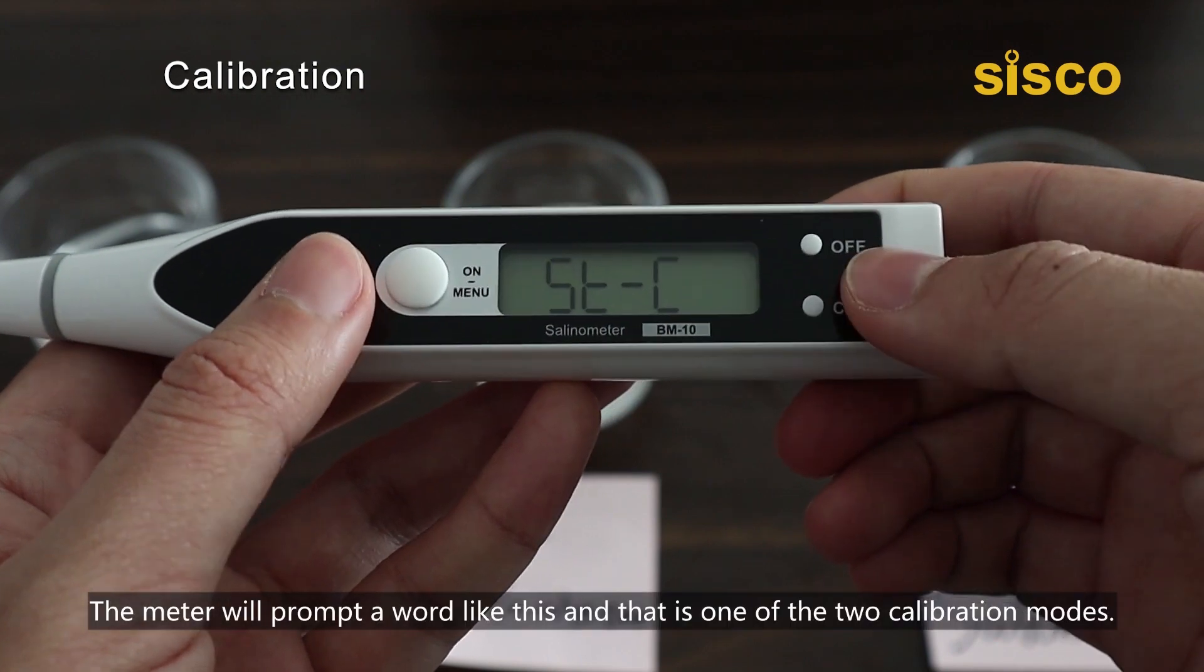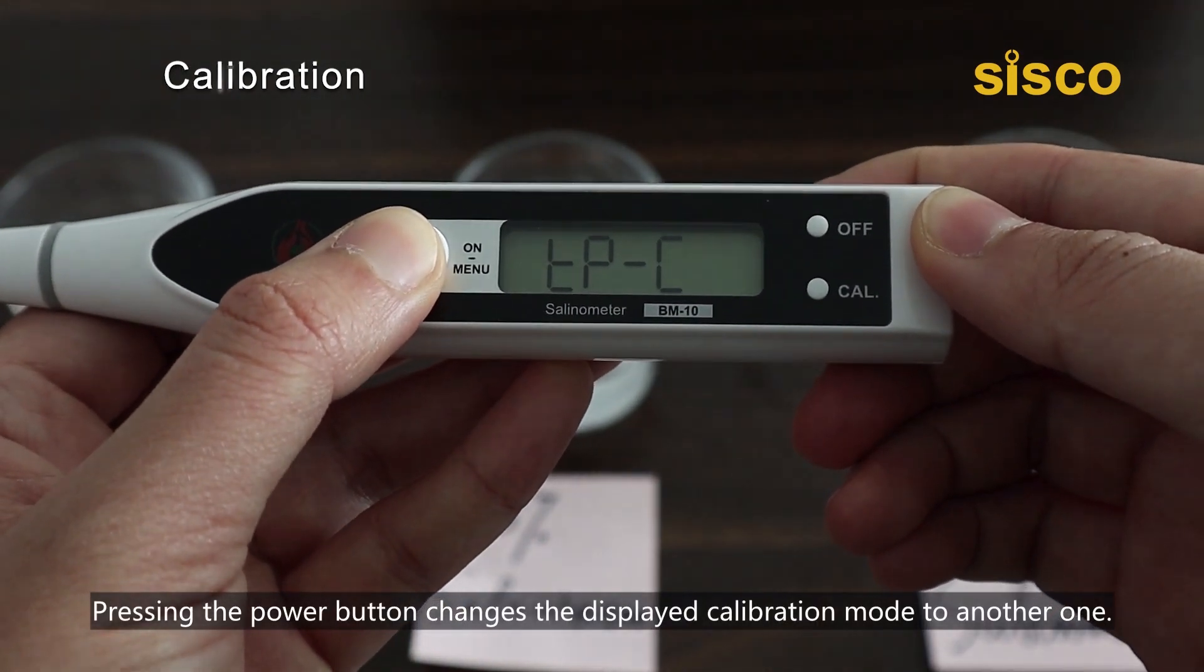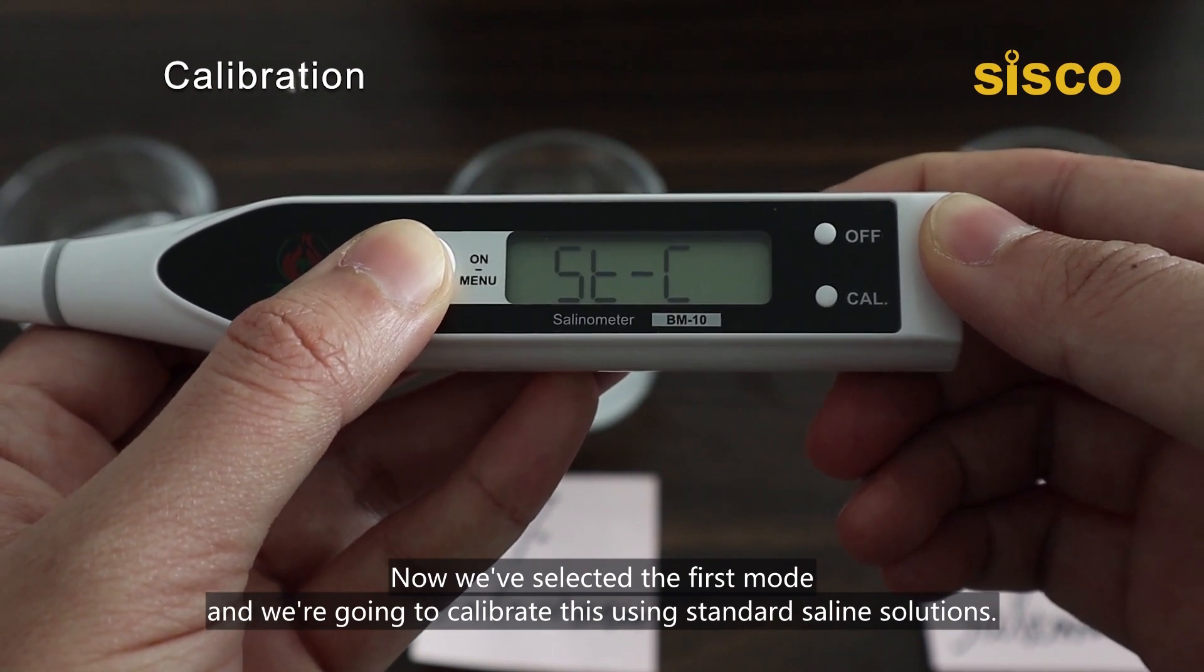and that is one of the two calibration modes. Pressing the power button changes the displayed calibration mode to another one. Now we've selected the first mode, and we're going to calibrate this using standard salt solutions.